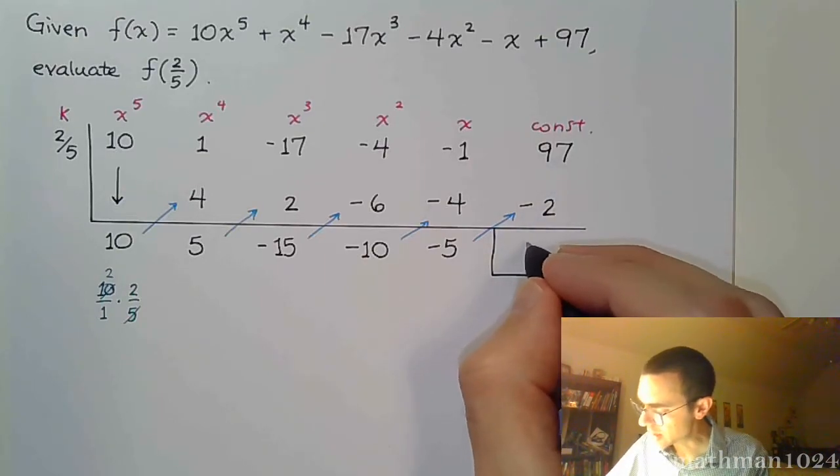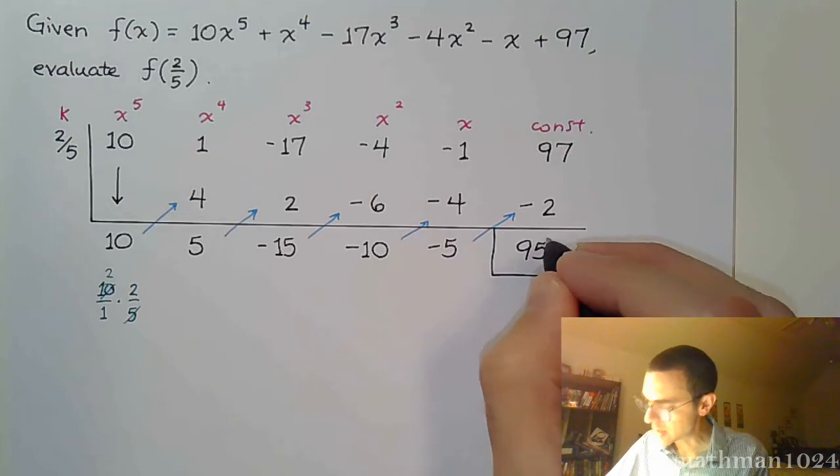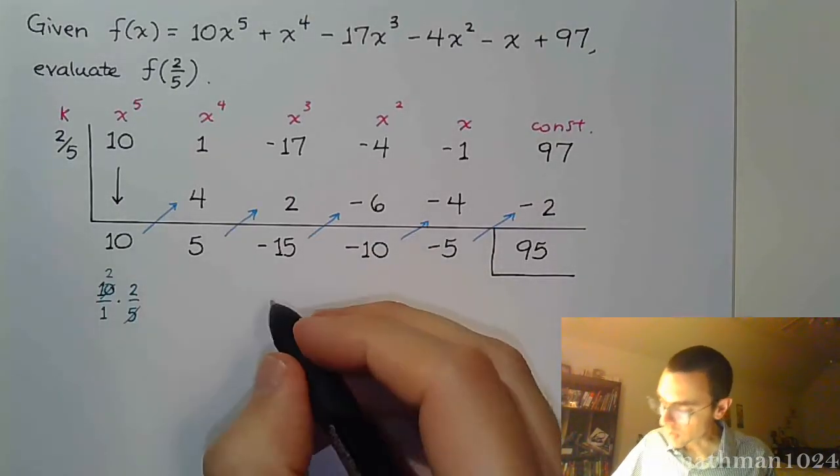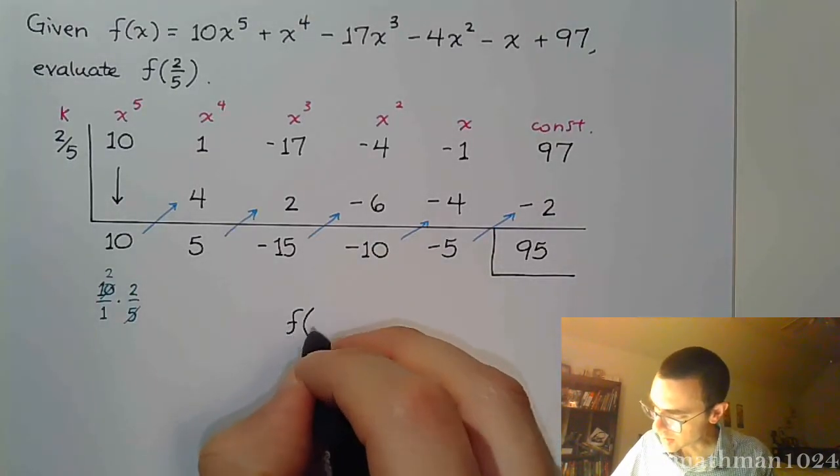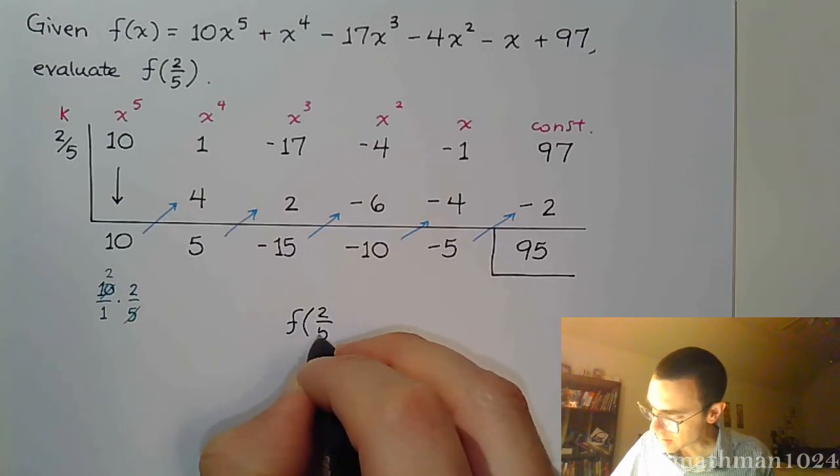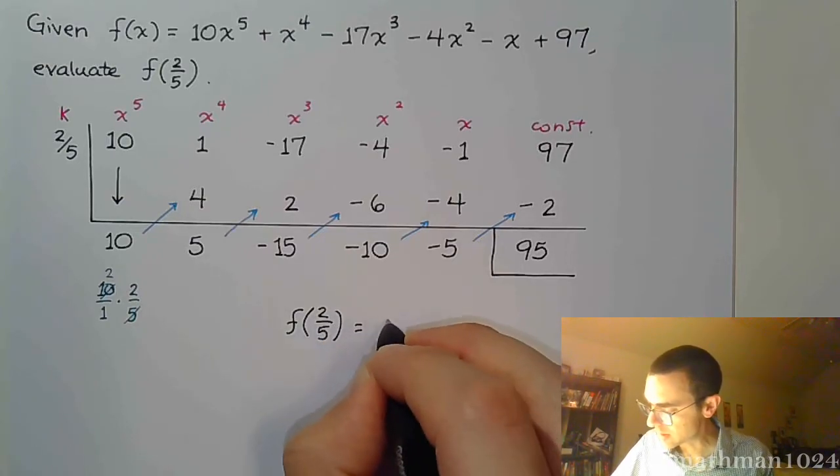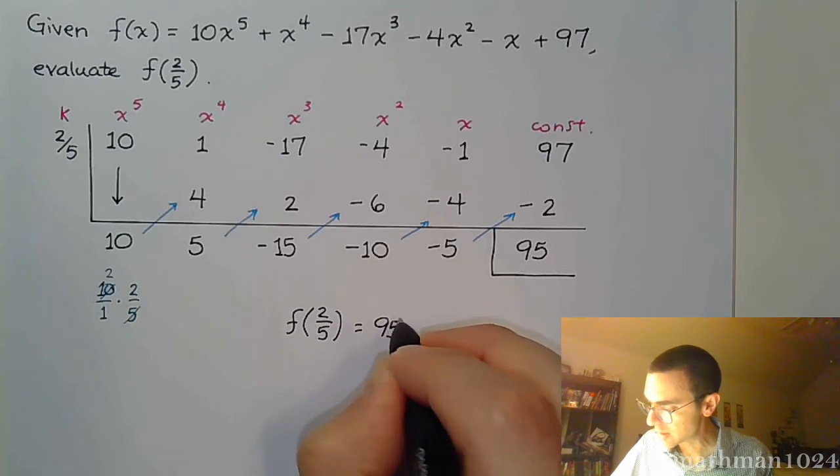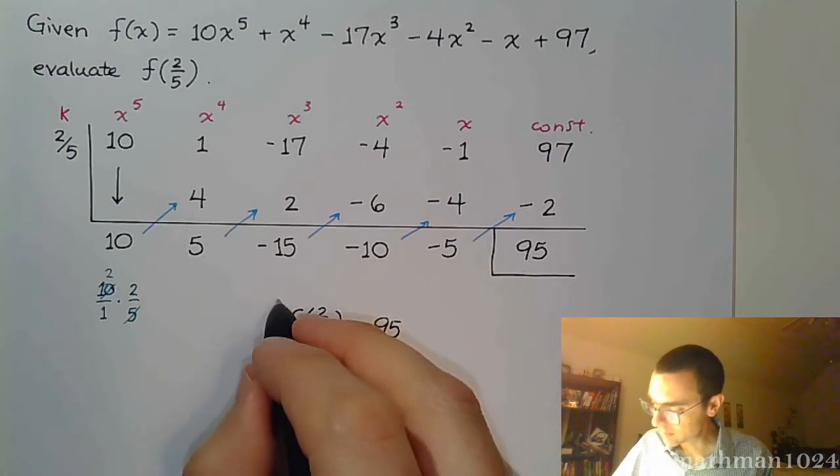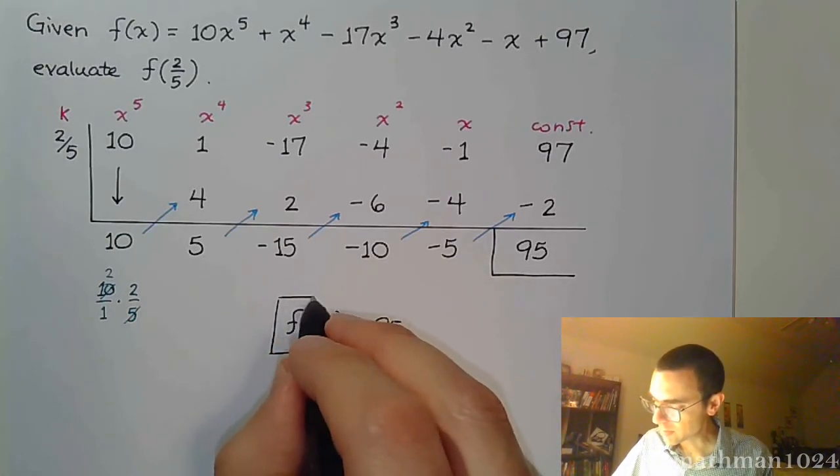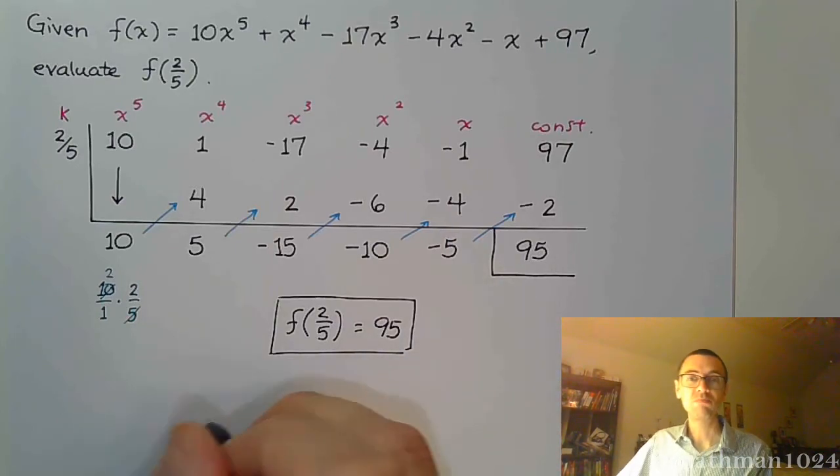97 and a negative 2 is 95. So at the end of all of this, f of 2 over 5 is equal to 95. And there we go.